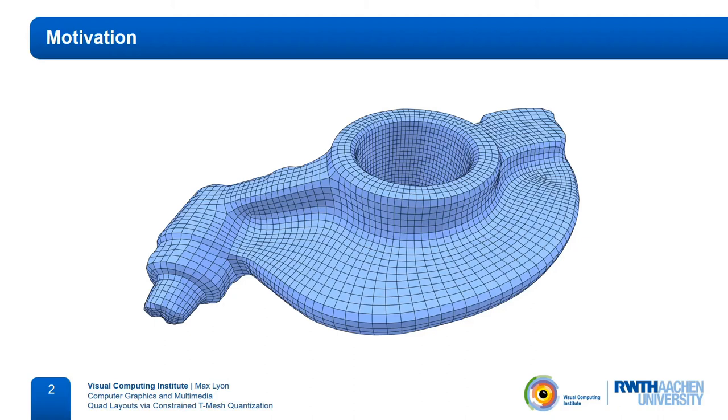Quad meshes are useful in a variety of applications, from animation to engineering. High quality quad meshes should be semi-regular, meaning that most vertices are incident to four quads, while only a few singularities are incident to a different number of quads.